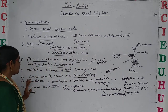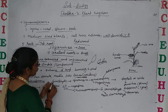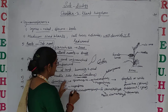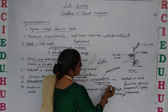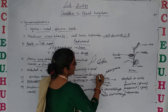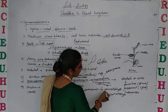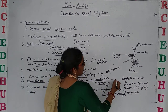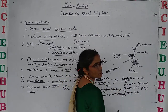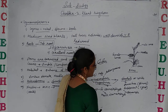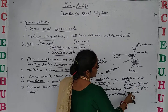Gymnosperms contain two types of spores: microspores and megaspores. These spores are produced inside the sporophylls, which contain sporangia. Microspores develop into the male gametophyte and are known as pollen grains, whereas megaspores are produced inside the female gametophyte. Microspores and megaspores sometimes combine compactly, forming a structure known as strobili or cones, which may be present on the same plant as in pinus, or on different plants as in cycas.